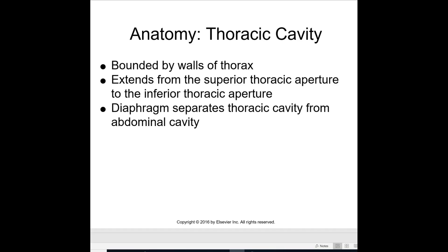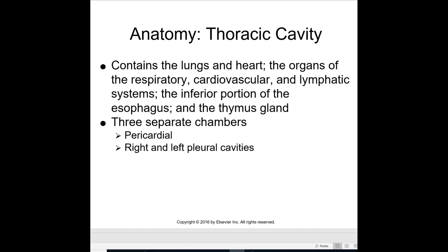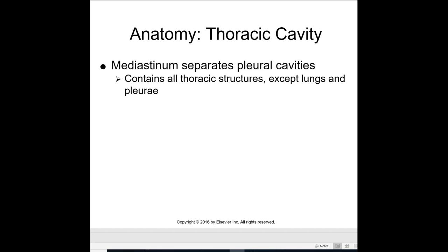The thoracic cavity is bounded by the walls of the thorax and extends from the superior thoracic aperture to the inferior thoracic aperture. The diaphragm separates the thoracic cavity from the abdominal cavity. The thoracic cavity contains the lungs and the heart, organs of the respiratory, cardiovascular, and lymphatic systems, the inferior portion of the esophagus, and the thymus gland. There are three separate chambers: the pericardial and the right and left pleural cavities. The mediastinum separates the pleural cavities and contains all the thoracic structures except for the lungs and the pleura.